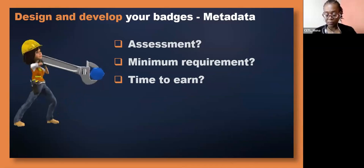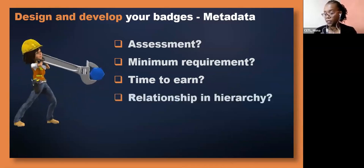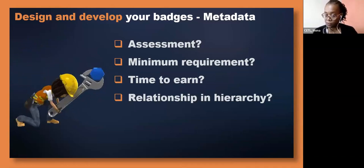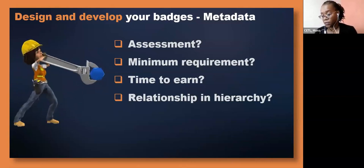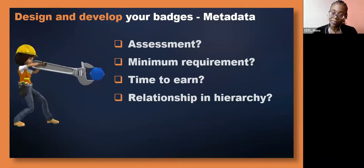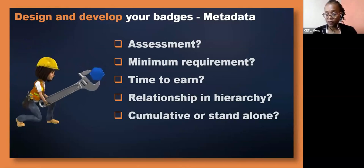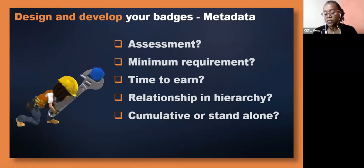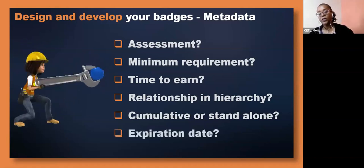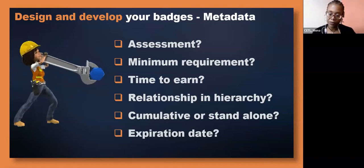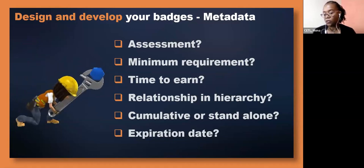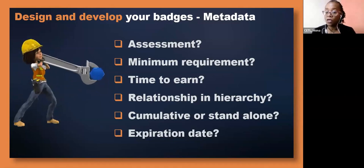Consider the relationship in the hierarchy. If you're looking at a tiered system, is this badge equal in a series, the first badge they must get to move up, or the last badge they'll receive? Think about whether this is a cumulative badge in a tiered or hierarchical structure, or a standalone badge — once they get it, that's it, there's nothing else to get. And will you put an expiration date on the badge? For teaching and learning purposes, it's generally good not to put an expiration date, but it depends on your contextual realities.